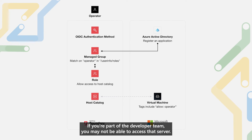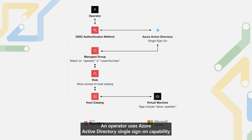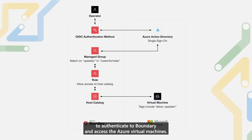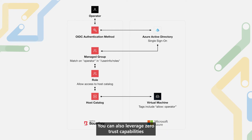If you're part of the developer team, you may not be able to access that server. An operator uses Azure Active Directory single sign-on capability to authenticate to Boundary and access the Azure virtual machines. You can also leverage zero trust capabilities like conditional access as part of that authentication.